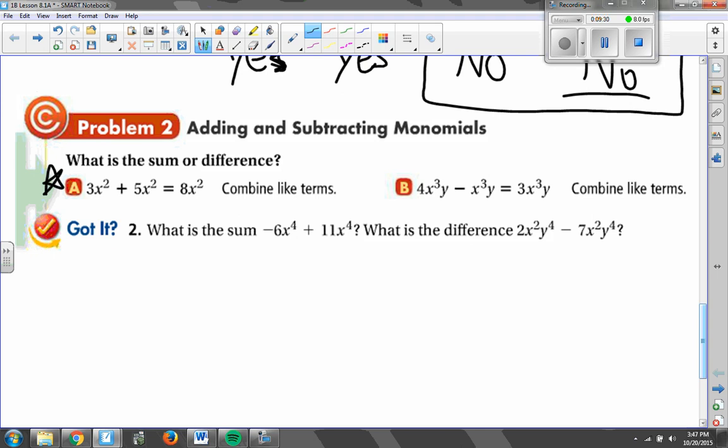The letters themselves should not change at all. For example, here in letter A, 3x squared plus 5x squared is 3 plus 5 is 8, 8x squared. My x squared did not change at all. But 3 plus 5 gives me 8x squared as my answer.